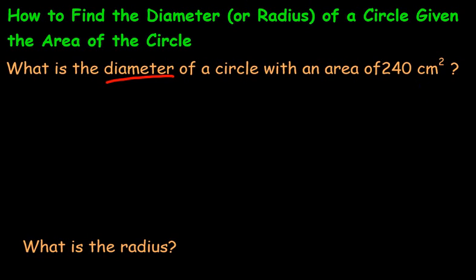So let us first start by writing down the formula. So the formula for the area of a circle is pi r squared.